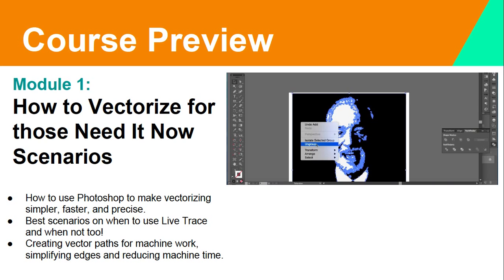In Module 1, we go over how to vectorize for those needed-now scenarios. It covers how to use Photoshop to make vectorizing simpler, faster, and more precise; the best scenarios for when to use a live trace option and when not to; and creating vector paths for machine work, simplifying edges and reducing machine time. This module covers the scenarios where a client comes in and needs a decal done immediately, with tips on how to create a clean, useful vector image.